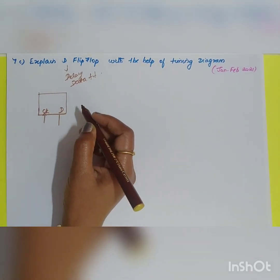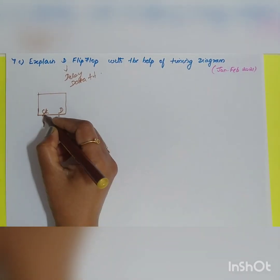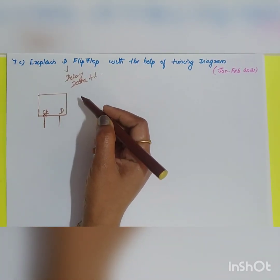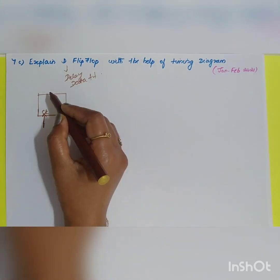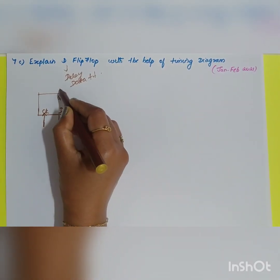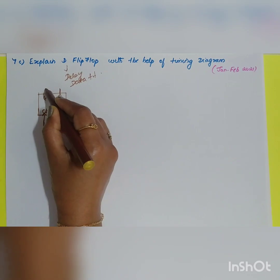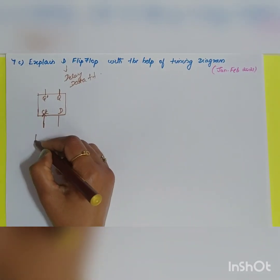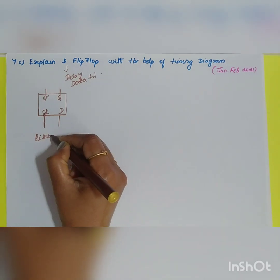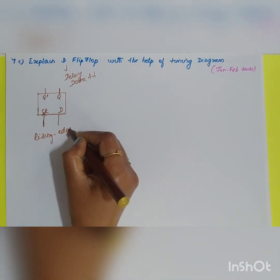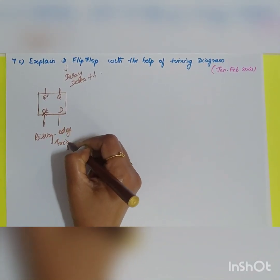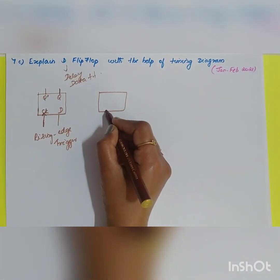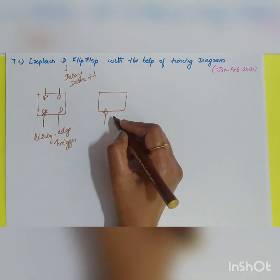The flip-flop output changes only in response to the clock signal. The clock can be of two types: either rising edge trigger or falling edge trigger. The output Q will be the output, and Q dash will be its complement. This is the diagram of the rising edge trigger.